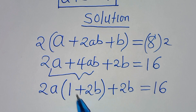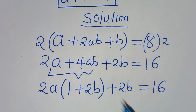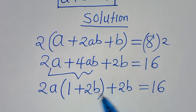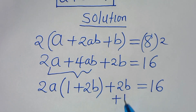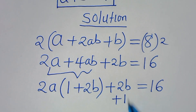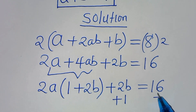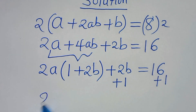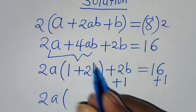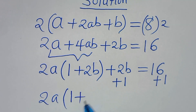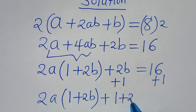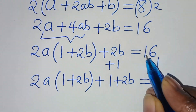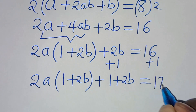Now if you check here, we have 1 + 2b, and we also need to make this part here have 1 + 2b so that we can factor out. So we add 1 on both sides. On the right-hand side we also add 1, so that now we have 2a(1 + 2b) + (1 + 2b) = 16 + 1 = 17.